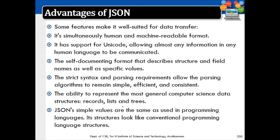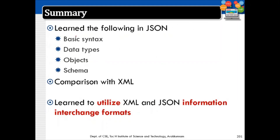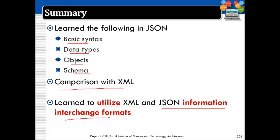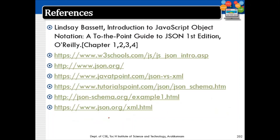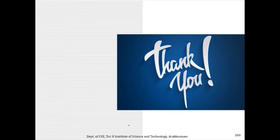These are some of the advantages of using JSON. We have learned the basics of JSON — syntax, data types, objects, and schema — and compared it with XML. Finally, we have learned to utilize XML and JSON as information interchange formats for exchanging data between different systems. These are the references for the JSON part. Thank you.